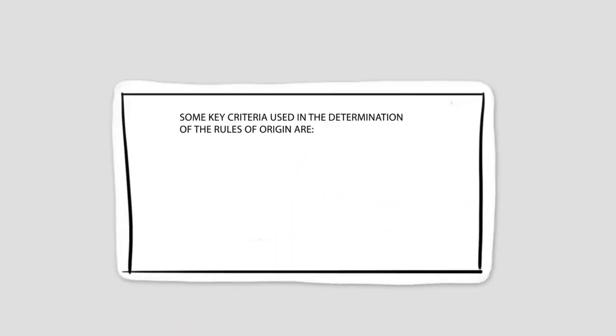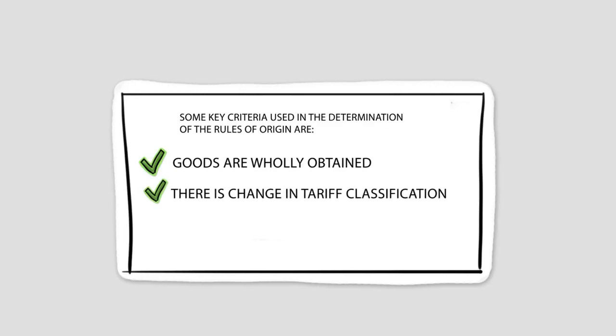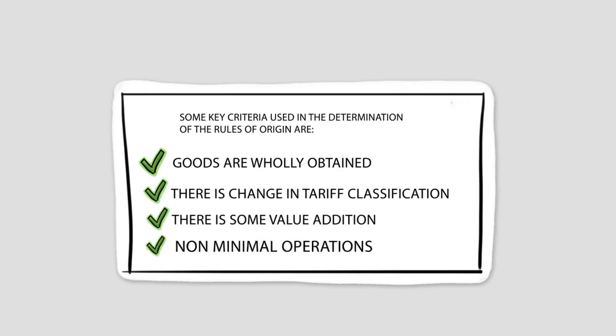Some key criteria used in the determination of the rules of origin are: goods are wholly obtained, there is change in tariff classification, there is some value addition, and non-minimal operations.